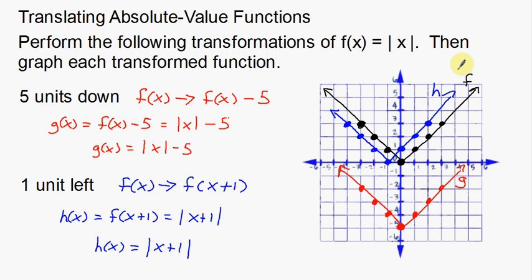That's just a couple of examples of translating absolute value functions — basically moving them up, down, left, and right, and showing some of the notation to go along with it. Remember: absolute value functions look like V's, they're pretty simple to work with. If you're moving up or down, add or subtract from the whole function. If you're moving left or right, add or subtract directly to the x inside the function.